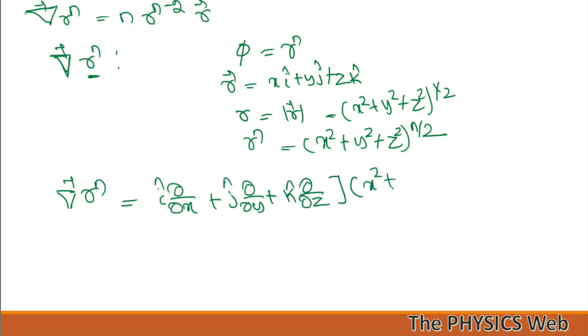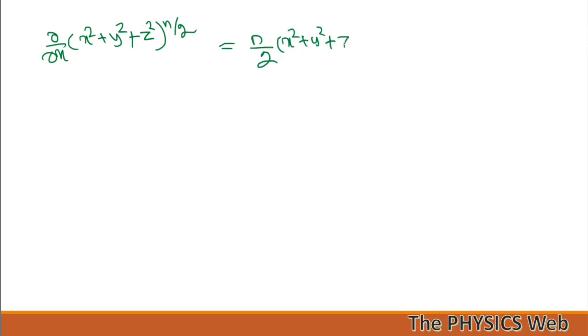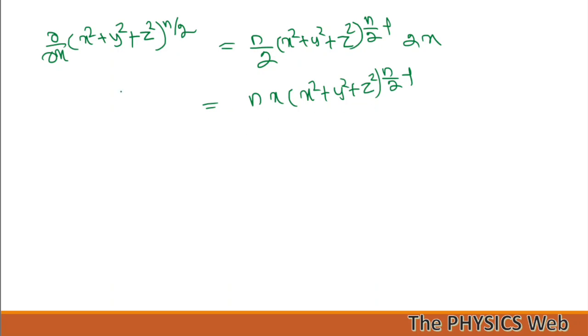We calculate the derivative for the first term with respect to x, and similarly write for y and z. ∂/∂x [(x²+y²+z²)^(n/2)] = (n/2)(x²+y²+z²)^(n/2−1)·2x. The 2s cancel, giving n·x·(x²+y²+z²)^(n/2−1). Similarly, with respect to y it is n·y·(x²+y²+z²)^(n/2−1), and with respect to z it is n·z·(x²+y²+z²)^(n/2−1).